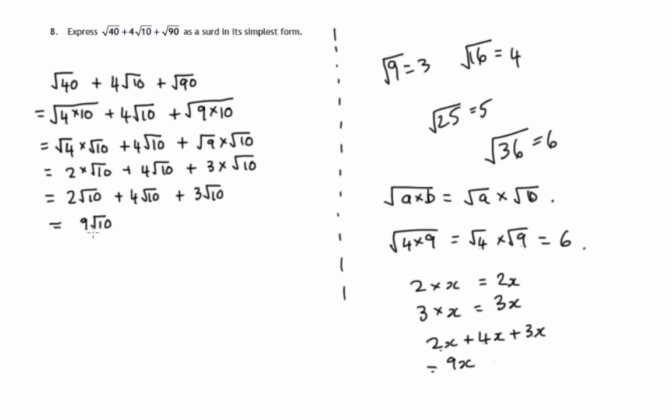And that's simplified because the number under the square root, 10, does not have factors that are square numbers. 2 times 5 is the best we can do with 10, and neither the square root of 2 nor the square root of 5 work out as whole number answers. So we've reduced this surd to its simplest form.